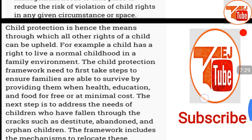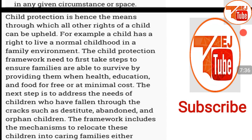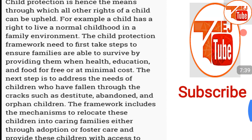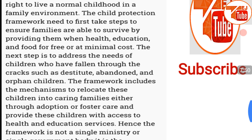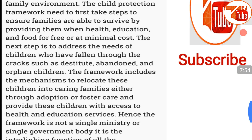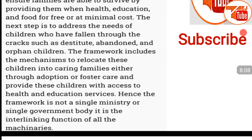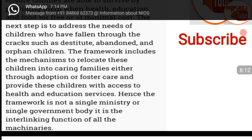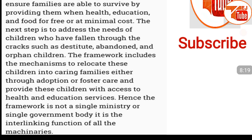Child protection is the means through which all other rights of a child are realized — a child has the right to live a normal childhood in a family environment. The child protection framework first takes steps to ensure families are able to survive by providing health, education, and food for free or at minimal cost. The next step is to address the needs of children who have fallen through the cracks, such as the destitute and abandoned. The framework includes mechanisms to relocate these children into caring families through adoption or foster care and provides access to health and education services. Hence the framework is not a single ministry or government body — it is the interlinking function of all the machineries.